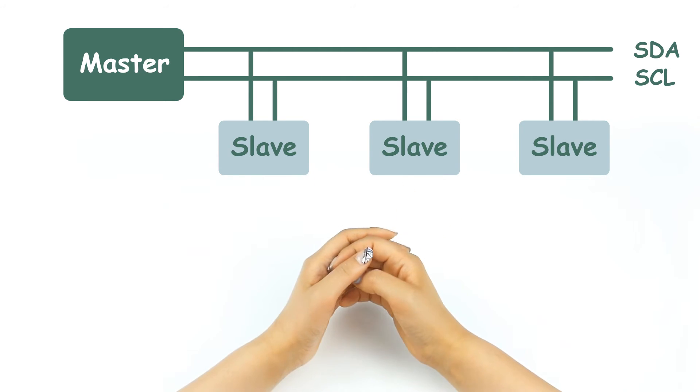When I2C master wants to communicate with a slave, it sends the slave's device address via bus. It's more flexible than the SPI communication, but it's a slower protocol.